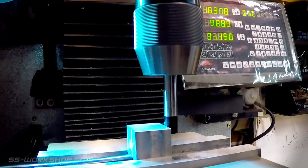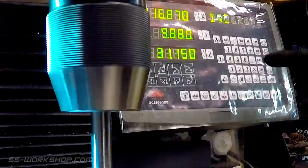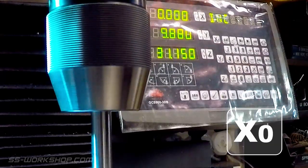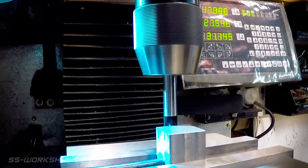To locate the centre of the block I use a centre finder. Starting on the first face I locate the edge and zero the digital readout. I then move to the Y axis and repeat the process.